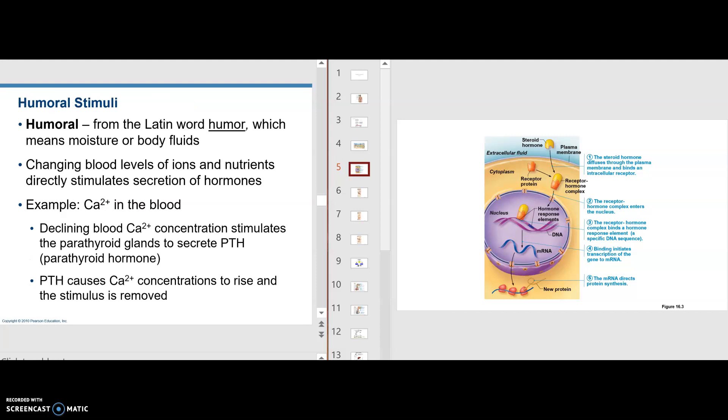Humoral comes from the Latin word humor, like vapor or moisture of body fluids, things that emanate within the body fluids. So changes in blood levels of ions and nutrients directly stimulate certain hormones. For example, calcium in the blood can cause the parathyroid gland to secrete PTH. PTH raises the blood calcium level by activating bone to release calcium from bone in other areas. But what's stimulated? The blood levels of calcium in the blood stimulated the parathyroid gland to do that.